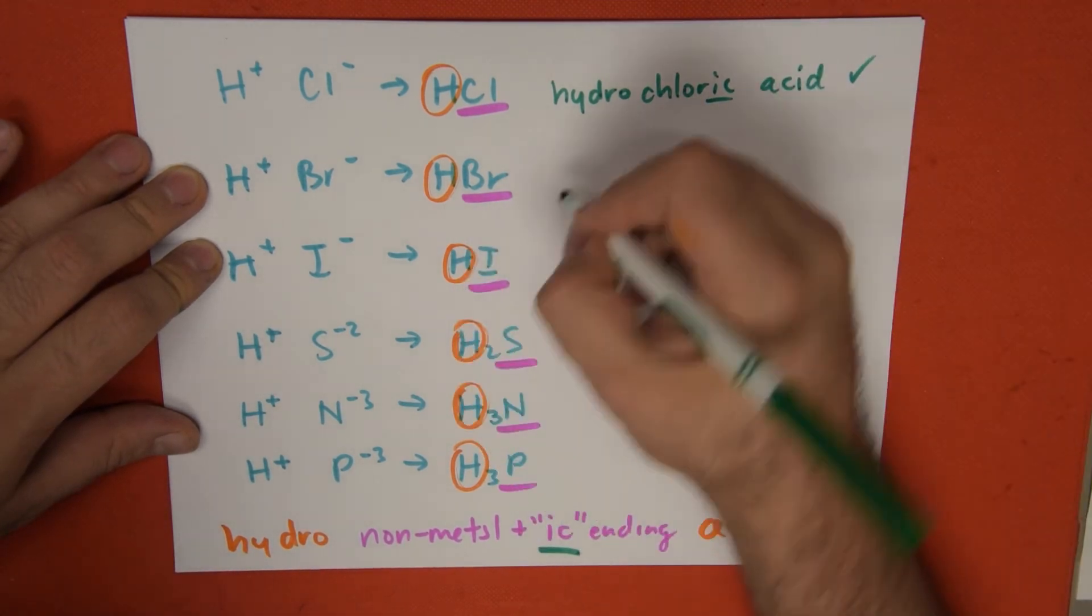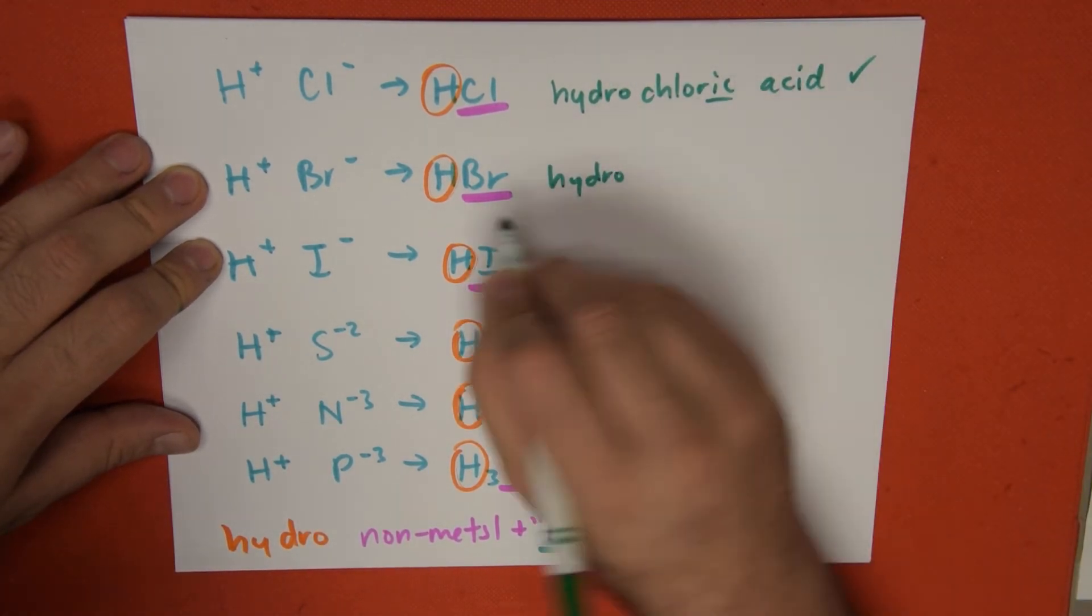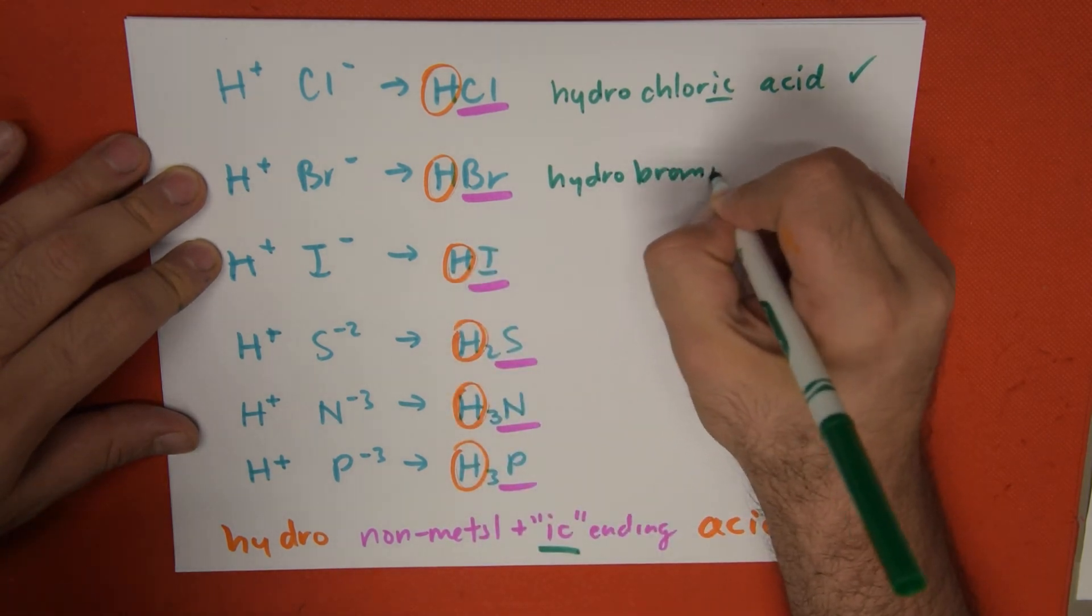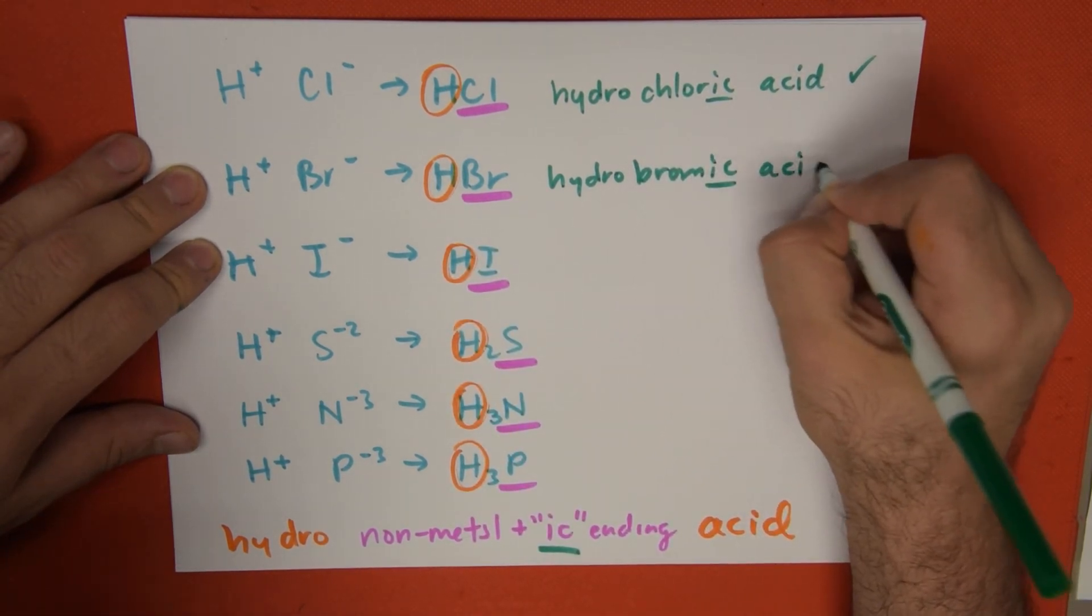Next one: hydro, which is invariable, bromine—but bromine turns into bromic. Hydrobromic acid.